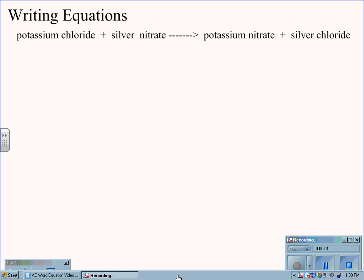Writing equations. Potassium chloride plus silver nitrate yields potassium nitrate plus silver chloride.